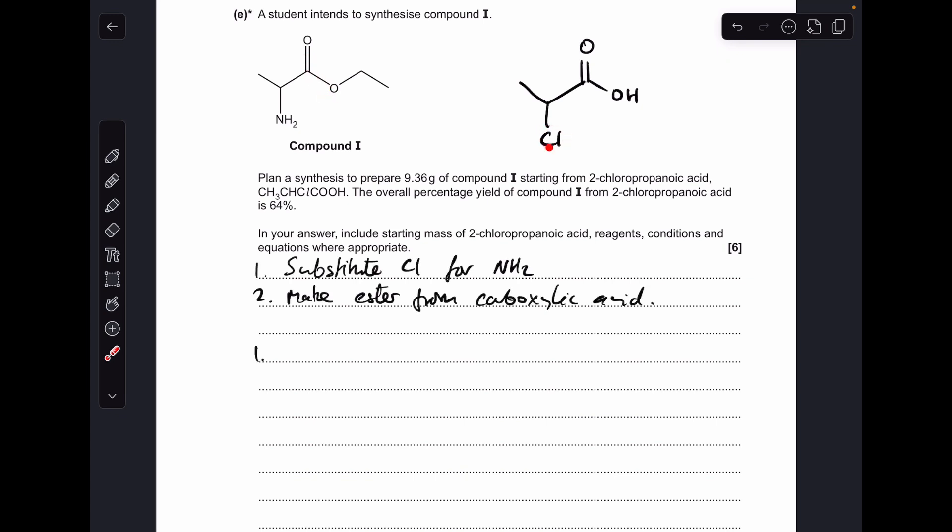Okay, so starting with the substitution of the chlorine for the NH2 group. What we need to do is react this with an excess of ammonia, but it needs to be in ethanol. So there's the equation for that one, and I'm just specifying the ethanol condition above the arrow there. That's totally fine.